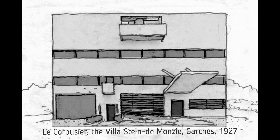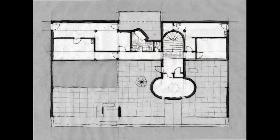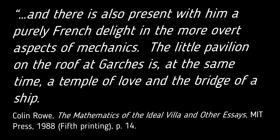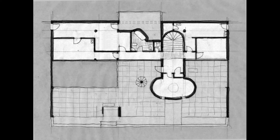Le Corbusier was hired by Michael and Sarah Stein, in conjunction with Gabrielle de Monzi, with whom they were to have a shared living arrangement. The resulting house, located in Garches just outside of Paris, was completed in 1927. Rowe points out that on the rooftop of the Villa Stein, Le Corbusier articulated what appears to be a phallus-shaped room. He writes: 'There is also present a purely French delight in the more overt aspects of mechanics. The little pavilion on the roof at Garches is at the same time a temple of love and the bridge of a ship.' We can infer that Rowe sees the rooftop temple as a temple of love because of its phallus shape.